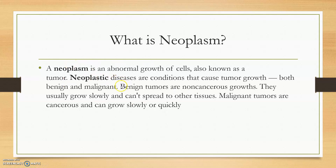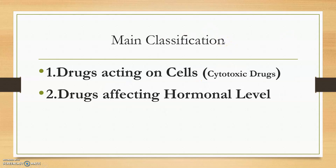There are two types of neoplasm: benign and malignant. So the main classification of anti-cancer drugs — the first category is drugs acting on the cells, that is cancerous cells, known as cytotoxic drugs. These agents will be killing the abnormally growing cells. The next category is drugs affecting the hormonal level, treating cancer by producing hormonal changes. The cytotoxic drugs are more important.